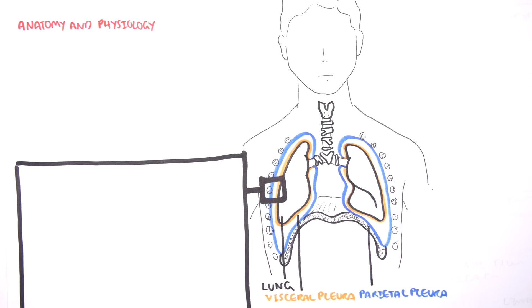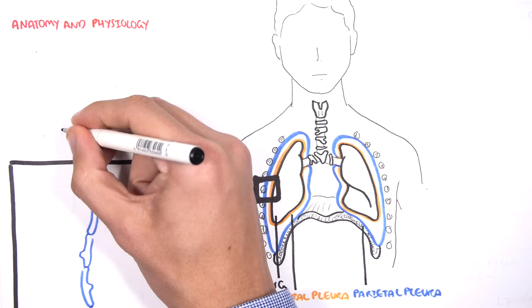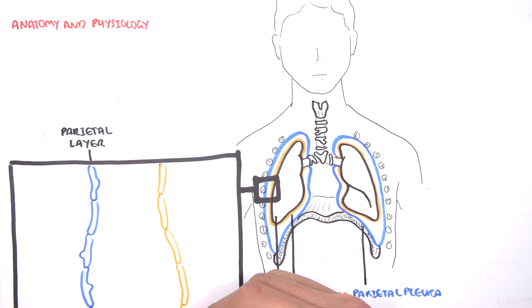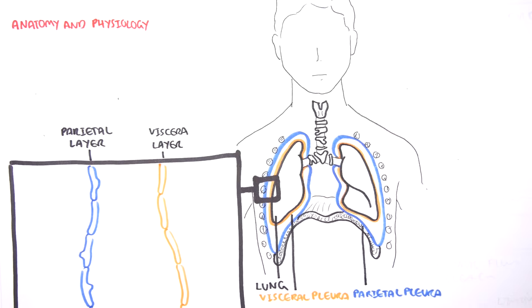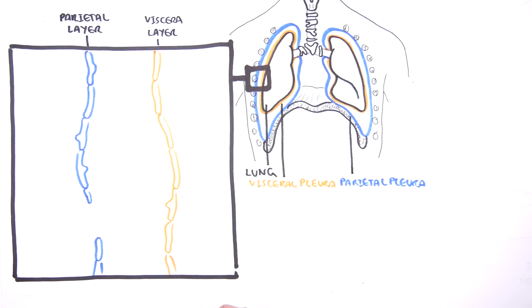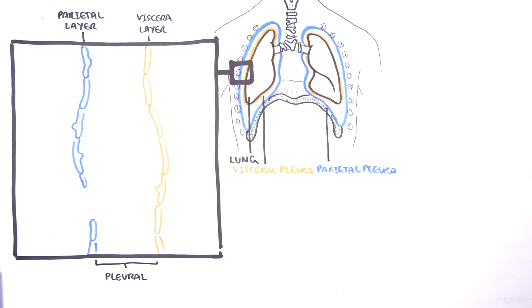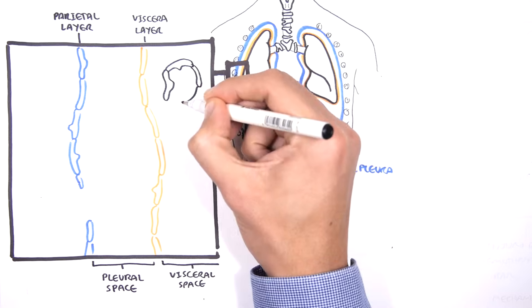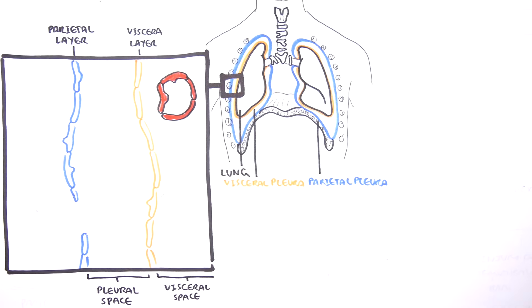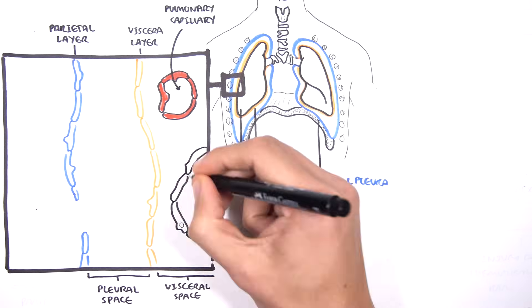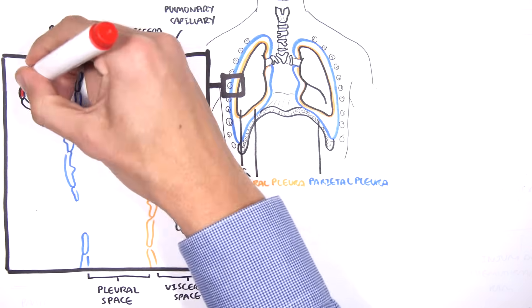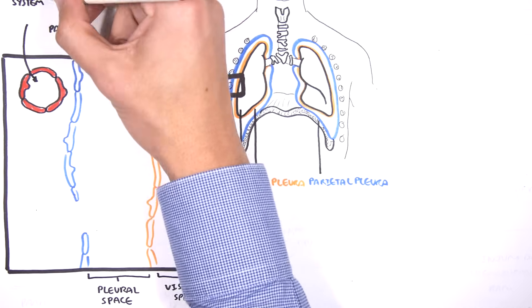Let's take a closer look. Here is the parietal pleural layer, and attached to the lung is the visceral pleural layer. In between is the pleural space, where we find pleural fluid. The visceral space is really the lungs, which contains the pulmonary capillaries and the alveoli. The parietal space is the thoracic wall, where we find the systemic capillaries.